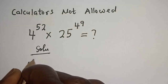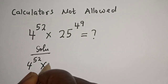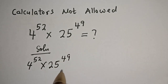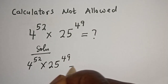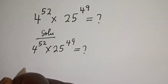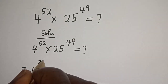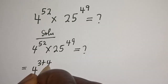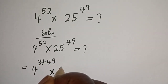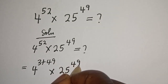4 raised to power 52 multiplied by 25 raised to power 49. We don't need the value directly. 4 raised to power 52 can be written as 4 raised to power (3 plus 49) multiplied by 25 raised to power 49.